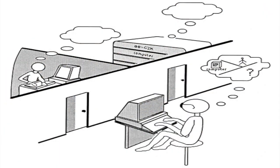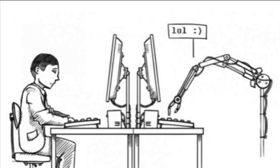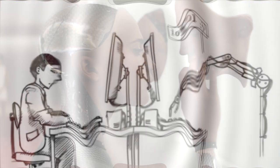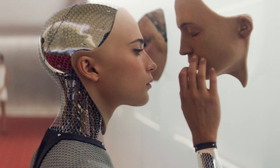For that, Turing proposed a test called the Turing Test. In the Turing Test, there is a computer in a closed room and an interrogator sitting outside. The interrogator asks questions, and the computer should answer in such a way that the interrogator cannot identify whether a human being or a computer is answering the question.